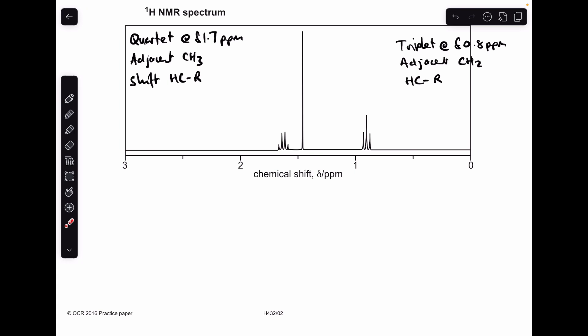So the fact that we've got a quartet and a triplet means that we must have an ethyl group in our molecule. So I've just color coded them to help with this explanation here. The blue protons are adjacent to the three orange ones, so the blue signal is the quartet. The orange protons are adjacent to the blue ones. There's two of them, so they're seen as a triplet.